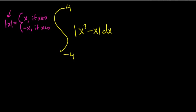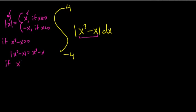We're going to care about when x³ - x is positive and when it's negative. If x cubed minus x is greater than 0, then the absolute value of x cubed minus x is just x cubed minus x — you use the first piece, replacing x with x cubed minus x. If x cubed minus x is less than 0, then the absolute value of x cubed minus x is negative parentheses x cubed minus x — you use the second piece.